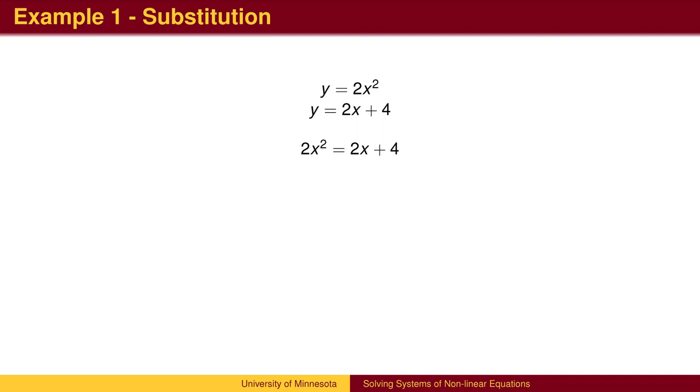To solve algebraically, we can substitute 2x squared for y in the second equation. We now have an equation in a single variable, x, which we can solve. First, by getting one side of the equation equal to zero. We can then divide both sides by two to make the numbers smaller and easier to work with. Then factor. And solve.